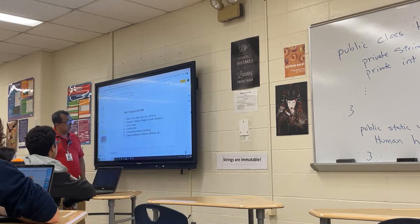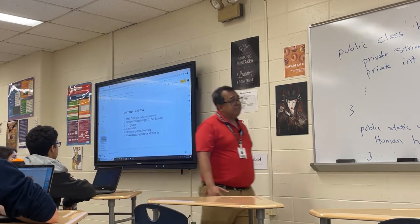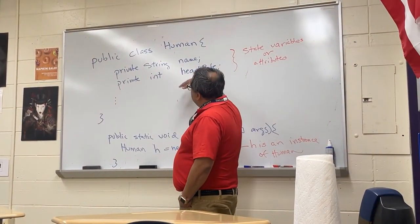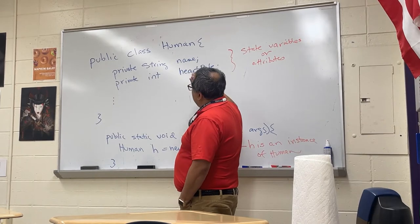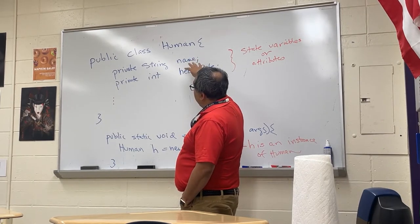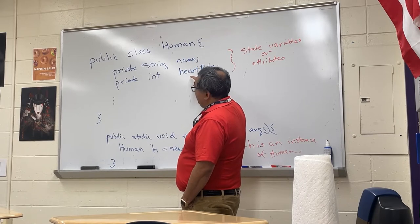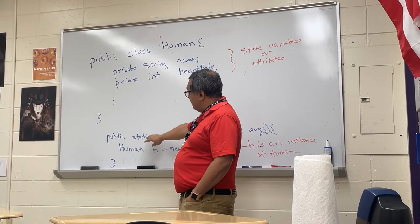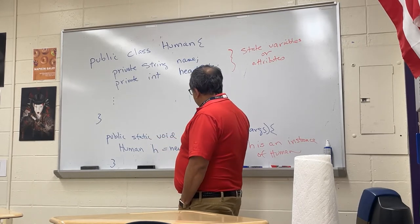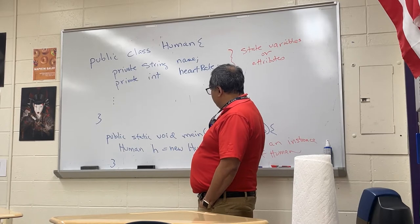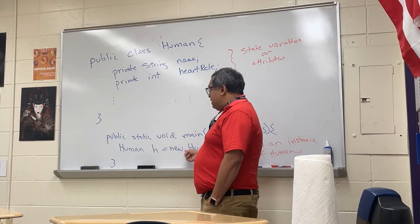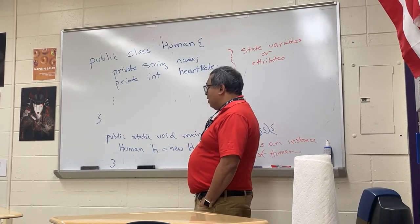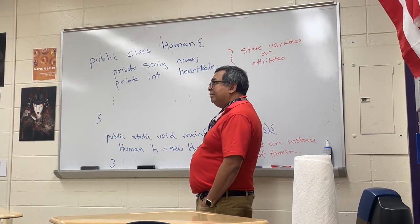Let's talk about this class that I have started to put together. I've called it the human class, and you can see I've got these two private variables — one is the name and the heart rate of the human. Down here in some other class, or it could be in this class, I have my test code, which is the main method, and I've got this human h equals new human. This is the standard way that we create objects in Java — we give it a variable name, we use the keyword new, and we call a constructor.